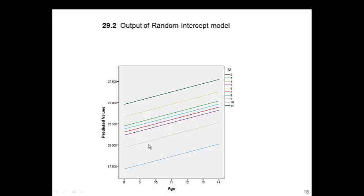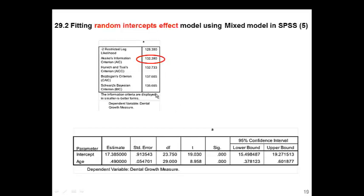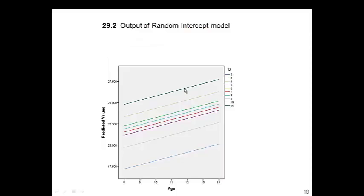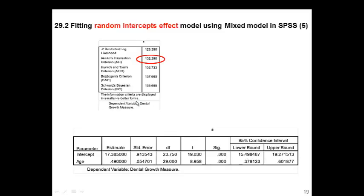This is what the model is predicting — it allows different random intercepts but the slope is kept the same. The result of the mixed effect model shows that 0.49 is the annual rate of increase in dental growth measures. The slope indicates increase in Y, which is the growth measure, by one unit increase of age — one unit being one year — so we call it the average annual increase of growth measures, which is 0.49 millimeters. This is statistically significant from zero, so we can say there is a positive association between age and growth measure.